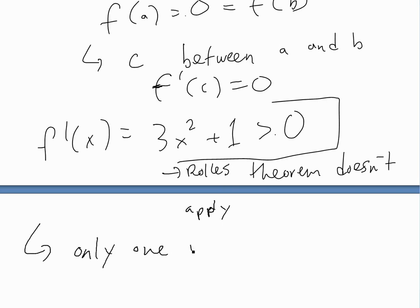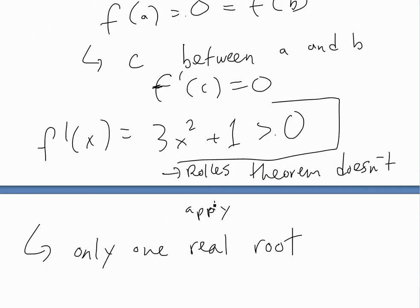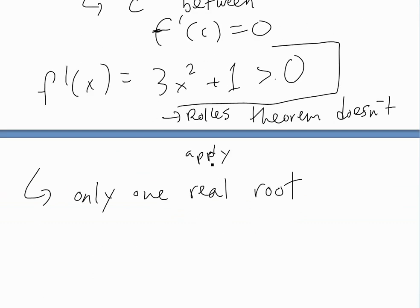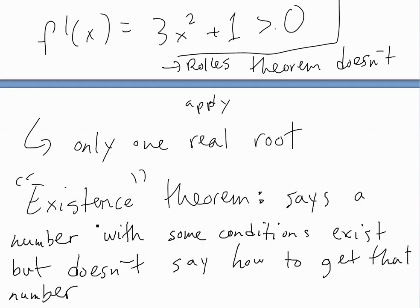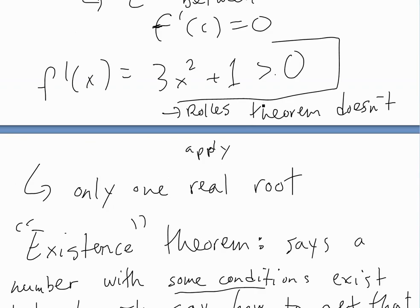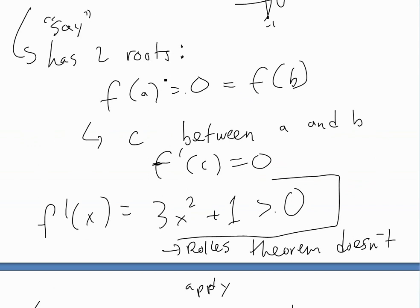Because f prime of c cannot equal zero, Rolle's Theorem does not apply for two roots, so there is only one real root. There may be other roots in the imaginary realm, but we didn't actually find what the root is — that's not what Rolle's Theorem is for. Rolle's Theorem is an existence theorem: all it does is say a number with certain conditions exists, but it doesn't say how to get that number.